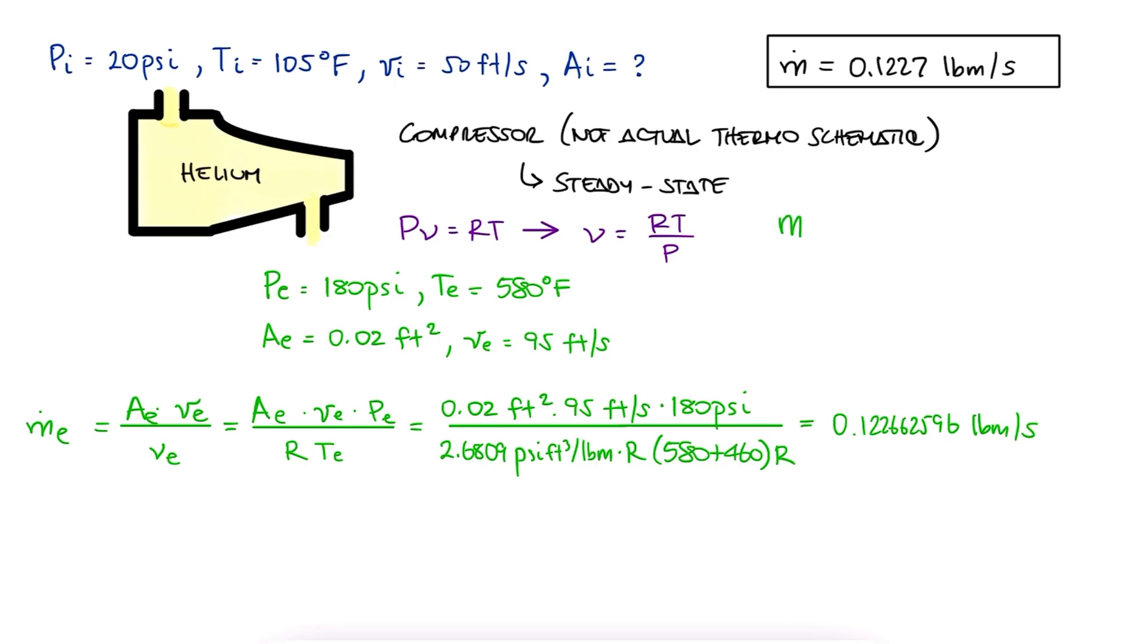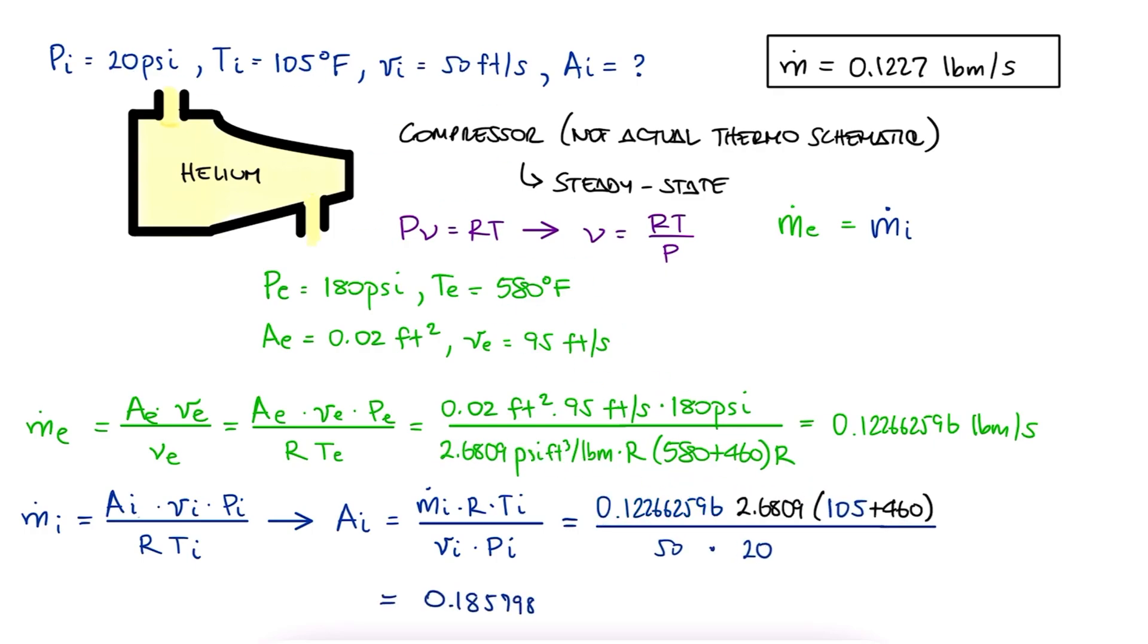Since the mass flow rate is the same at the exit as it is at the inlet, we can write this same expression with the inlet values to solve for the area at the inlet. We substitute all given values at the inlet, again with the temperature in Rankine, and find the area of the inlet.